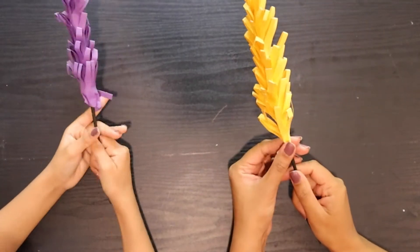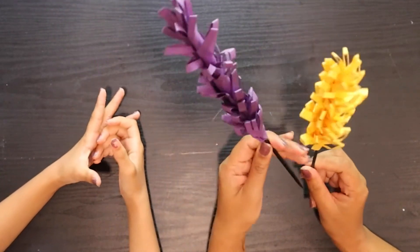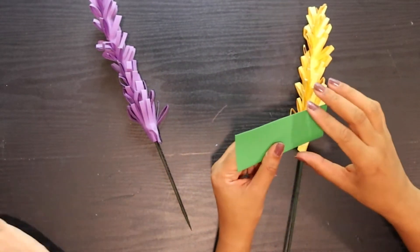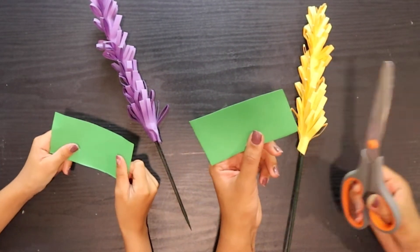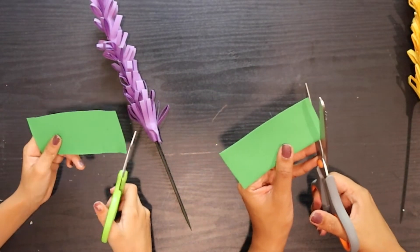So here we are with a completed flower and it looks beautiful, but we still need to make its leaves. So take a green paper. Okay! And take your scissors. Okay! Now you have to cut it like in a V-shape.